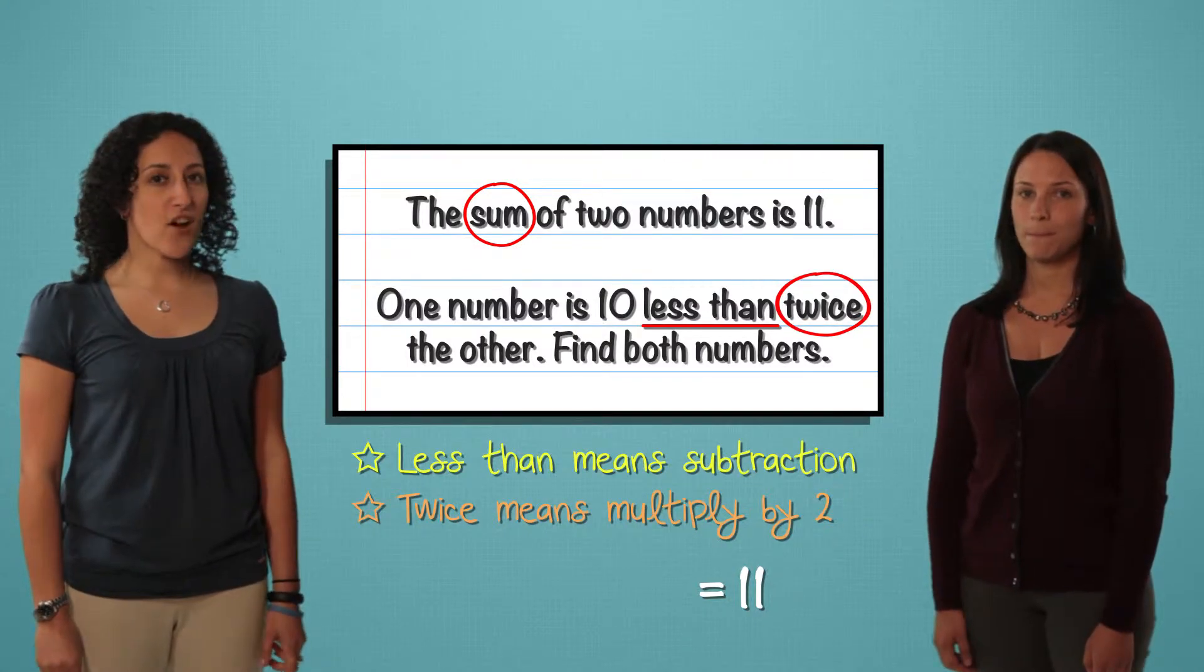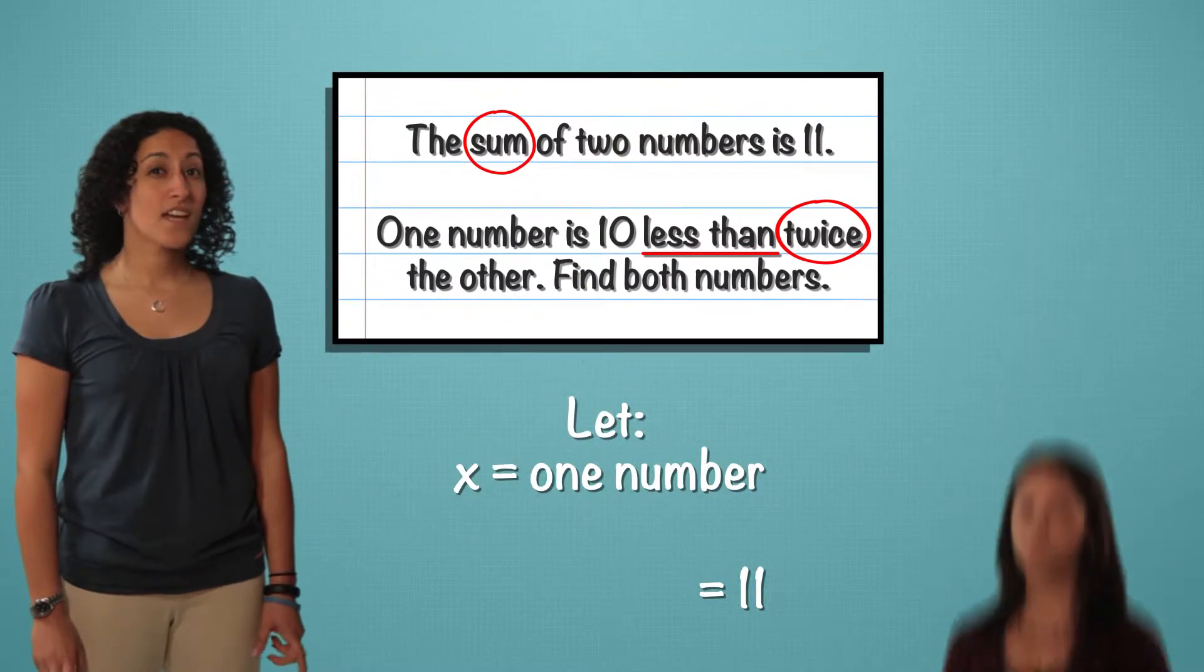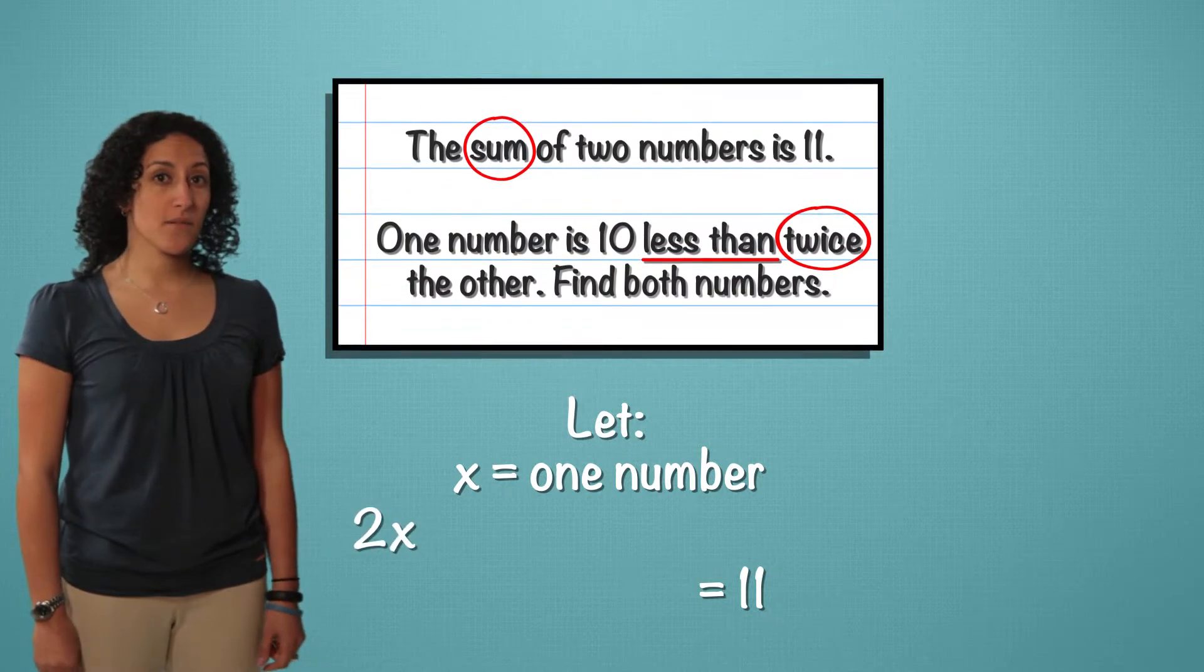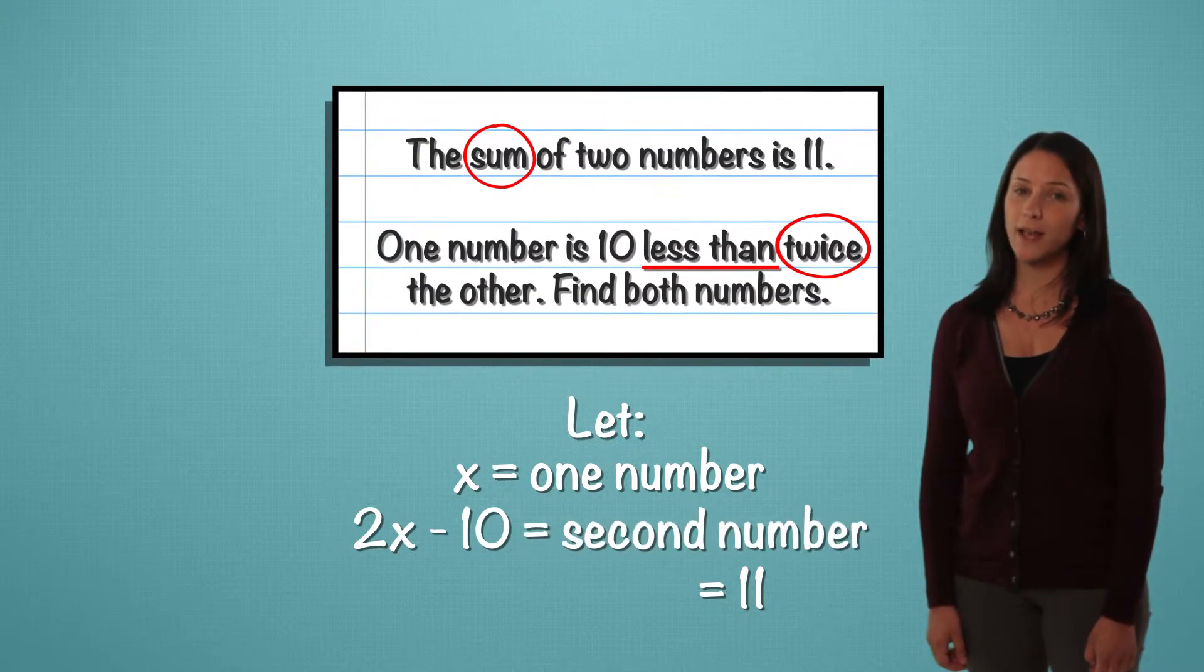Okay, now let's start assigning values. Start with let statements. Let x equal one number. Now for the second number. We know it's twice, so 2x. And then this less than means subtract. So let 2x minus 10 equal the second number.